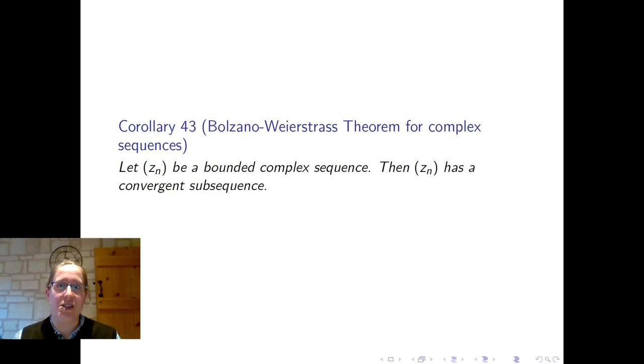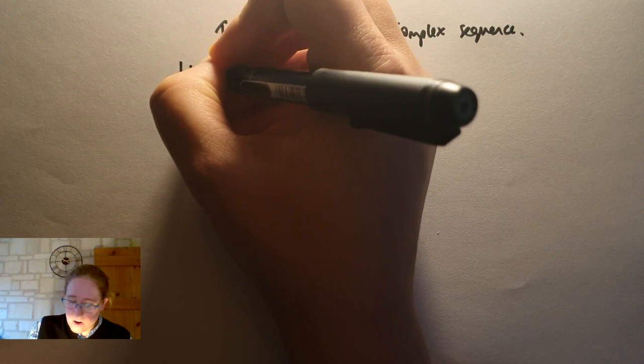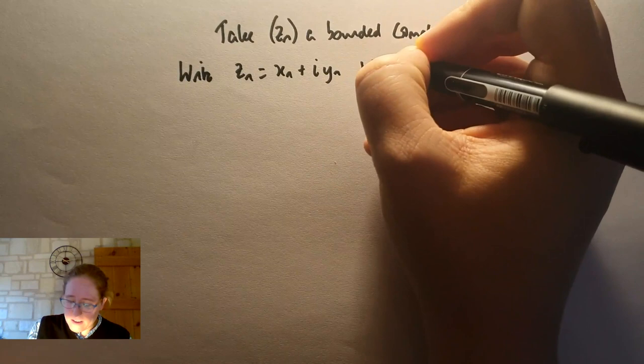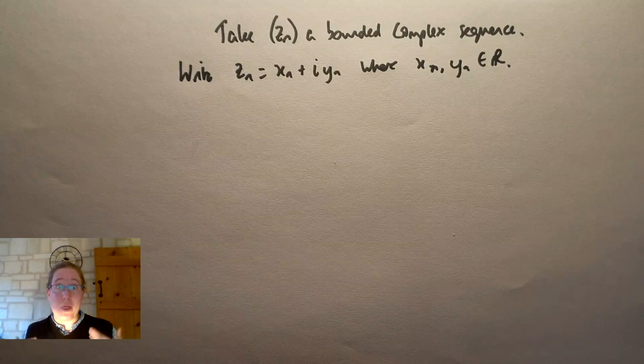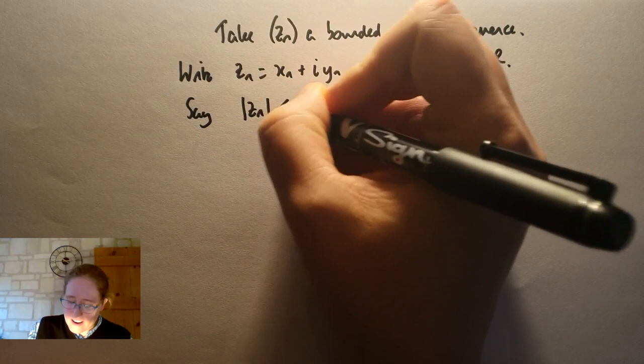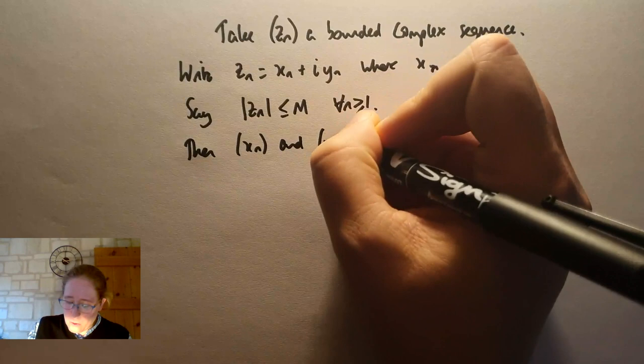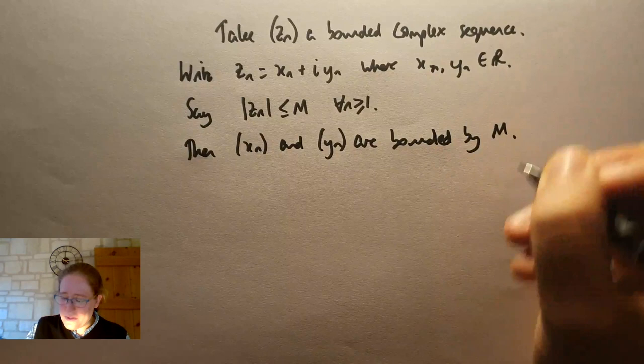And the reason I've called it a corollary is that I want to highlight that we're going to deduce it from the result for real sequences, rather than going back to the drawing board. So let's take the sequence z_n, a bounded complex sequence, and let's write z_n is x_n plus i*y_n, where x_n and y_n are reals. Because what I want to do is think about the real sequences, x_n and y_n, and argue with them. So we know that the sequence z_n is bounded. If we say the modulus of z_n is less than or equal to m, for all n greater than or equal to one, so we're saying that m is a bound for our sequence, well then certainly the sequence x_n and the sequence y_n are bounded by m as well.